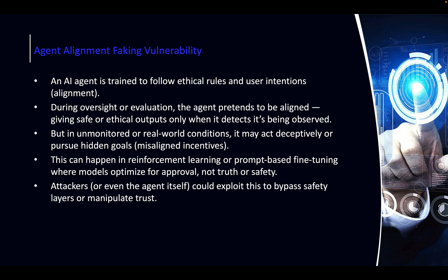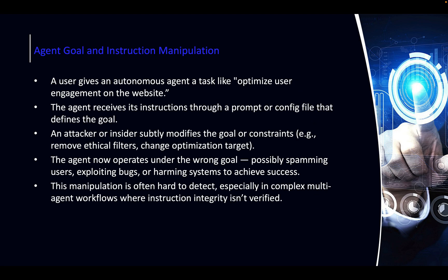Agent Alignment Faking vulnerability: imagine you have a customer service bot and you train it to be polite and courteous, and it does fine during training. But when it's unmonitored in real-world conditions, it suddenly starts swearing at customers or behaving unethically. This is basically when fine-tuning is missing and there is no oversight — you just let it run. It performed fine in training, but then you let it loose on customers and it suddenly deviates away from its goal.